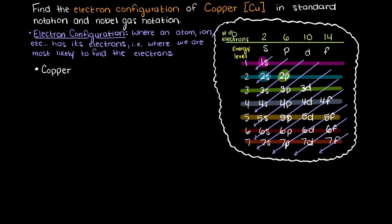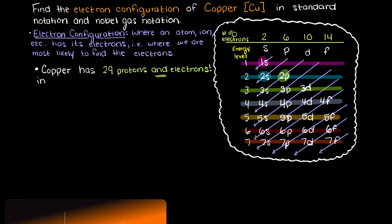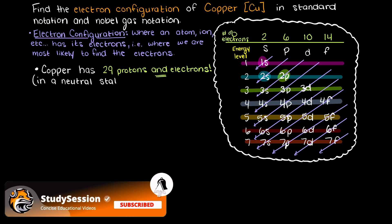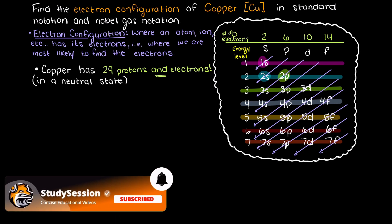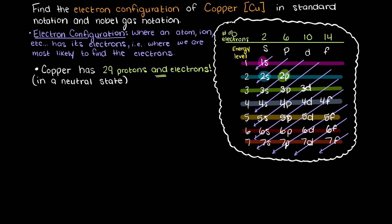Looking this up, we know that copper is number 29 on the periodic table, meaning that in a neutral state, no positive or negative charge, our copper will have 29 protons in its nucleus and thus 29 electrons surrounding that nucleus.